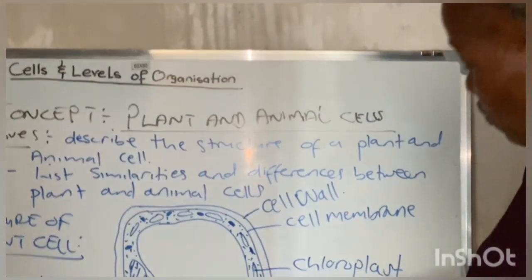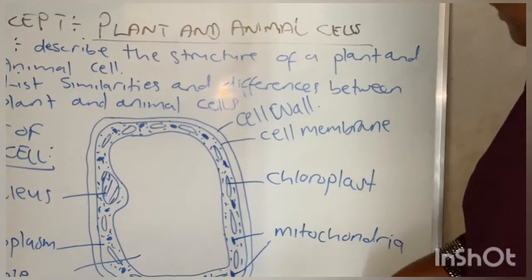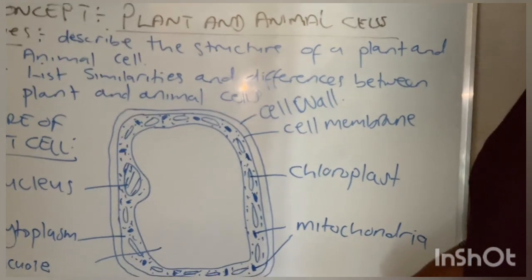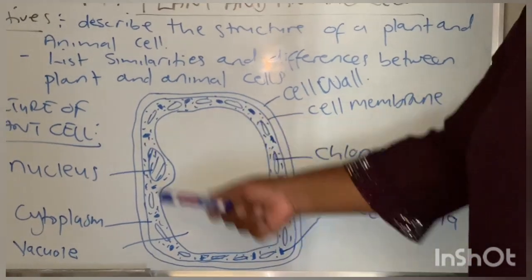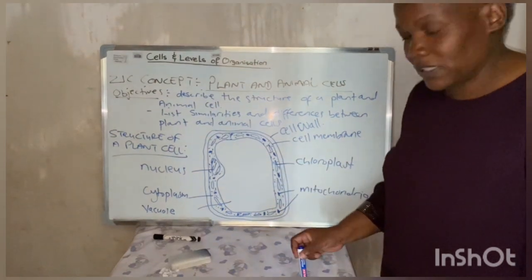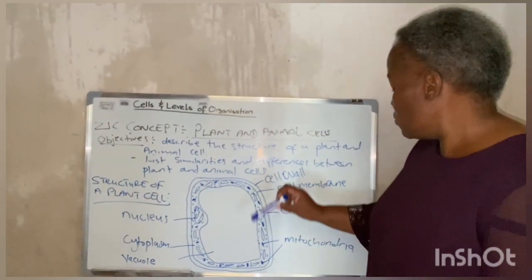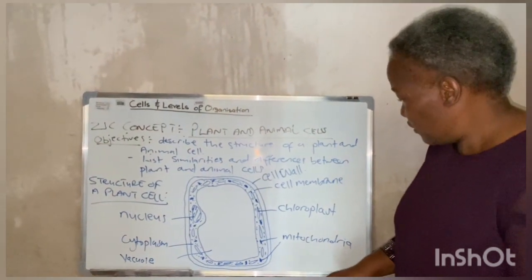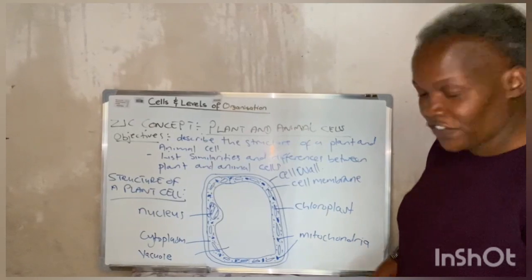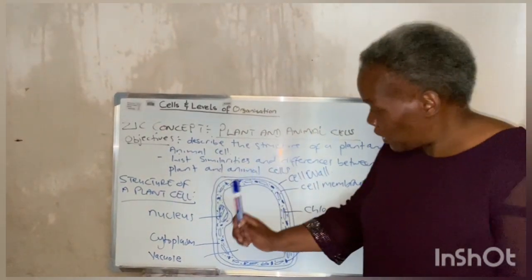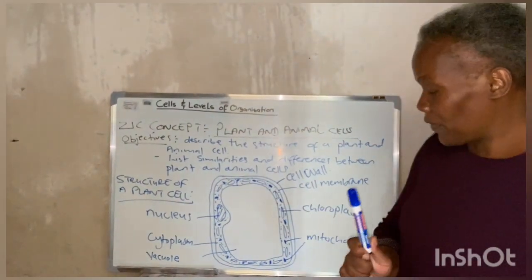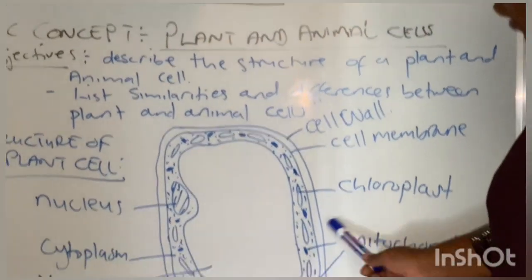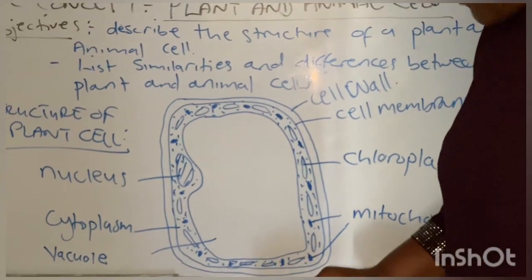The mitochondria is another special organelle — this one is responsible for producing energy. All living organisms need energy for various purposes, and we are going to look at this topic on energy again later on. Inside plants as well as inside animal cells, we have the mitochondria which are responsible for generating that energy.